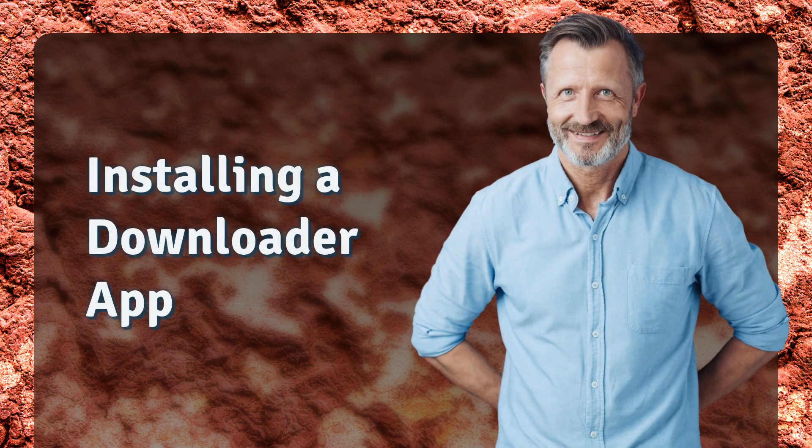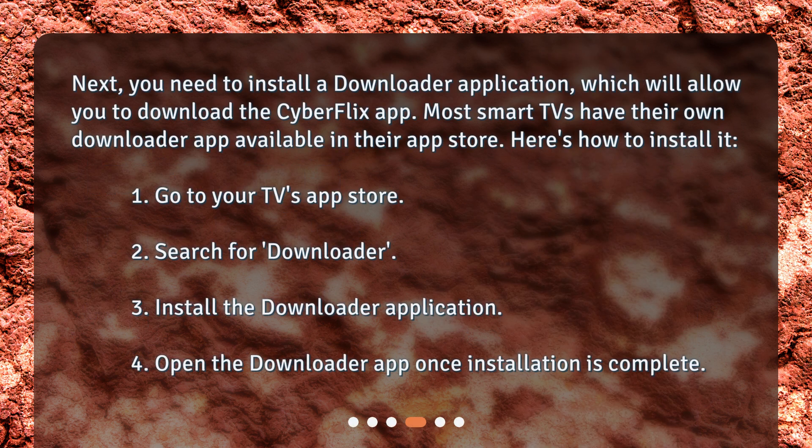Installing a Downloader App. Next, you need to install a Downloader Application, which will allow you to download the CyberFlix app. Most smart TVs have their own Downloader App available in their App Store. Here's how to install it: 1. Go to your TV's App Store. 2. Search for Downloader. 3. Install the Downloader Application. 4. Open the Downloader App once installation is complete.